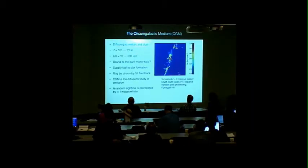First, we have to define what's the circumgalactic medium. It's a diffuse gas halo surrounding a galaxy. There are also metals and dust in it. Its temperature is typically 10 to the 4 to 10 to the 6 kelvins. The CGM extends from tens of kiloparsecs to 300 kiloparsecs and beyond that, we usually regard that as the IGM, but there isn't really a clear boundary between the CGM and the IGM.